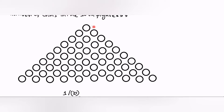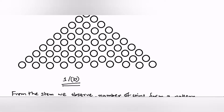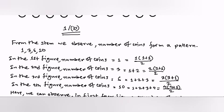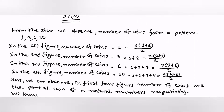In the first row it will be one coin, in the second row there will be two coins, in the third row there will be three coins, in the fourth row four coins, and respectively. At last, in the tenth row there will be ten coins. For the solution of question B, they have asked us to show...